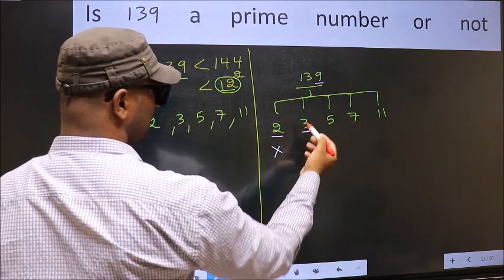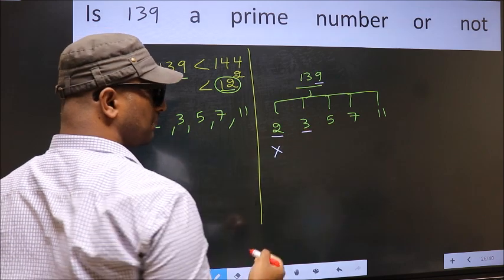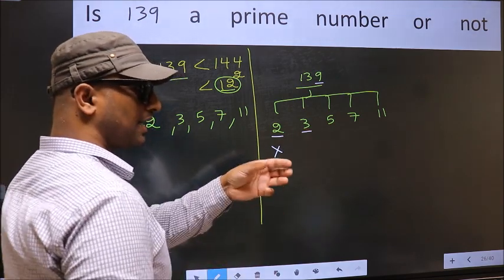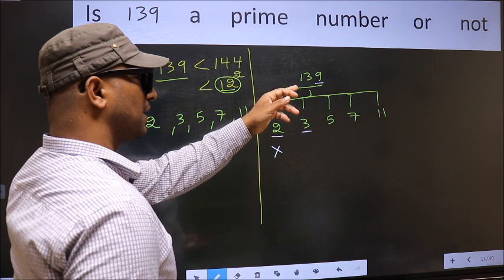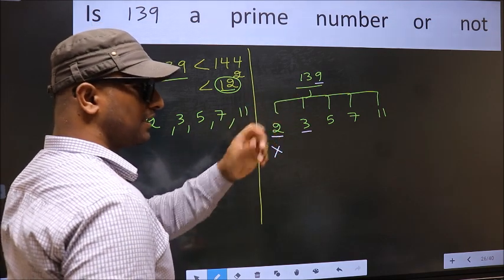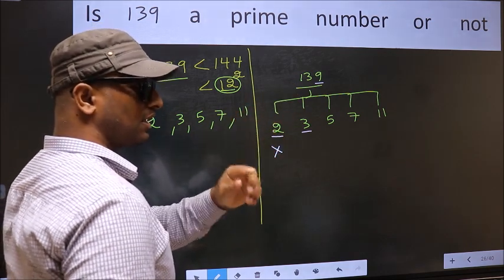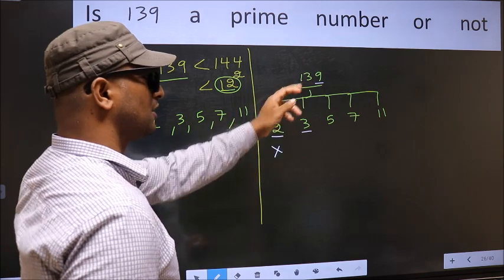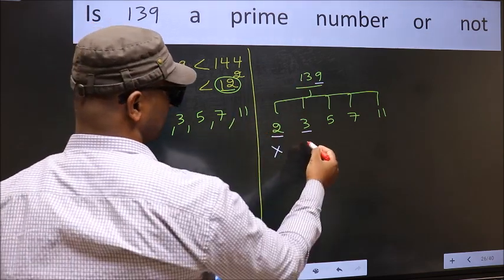The other number 3, to check divisibility by 3, add the digits. 1 plus 3 plus 9, we get 13 and 13 is not divisible by 3. So this number also not divisible by 3.